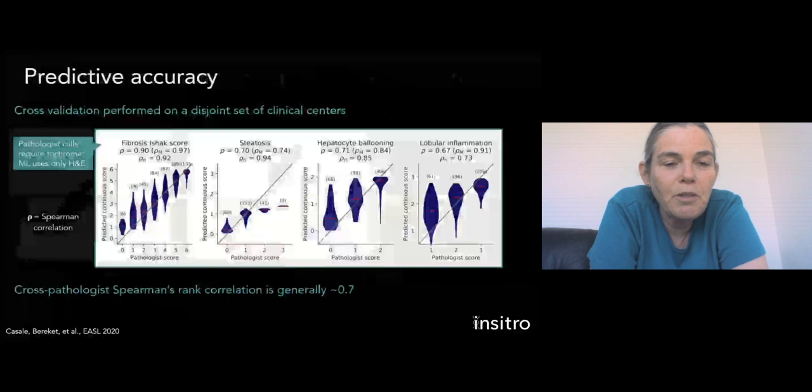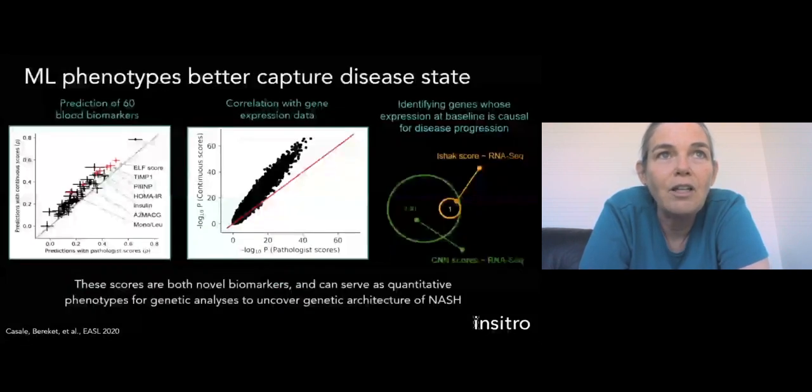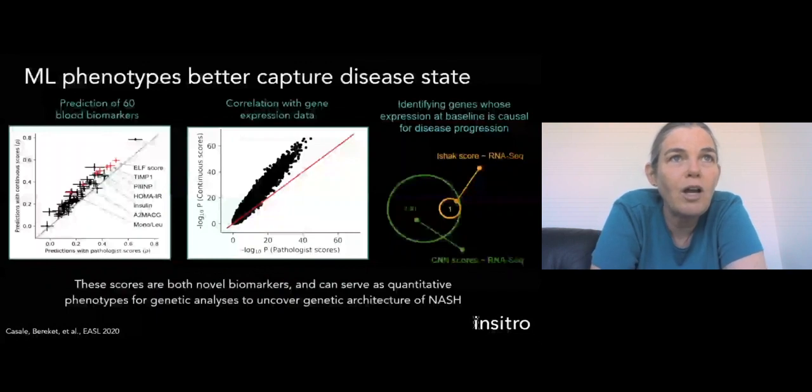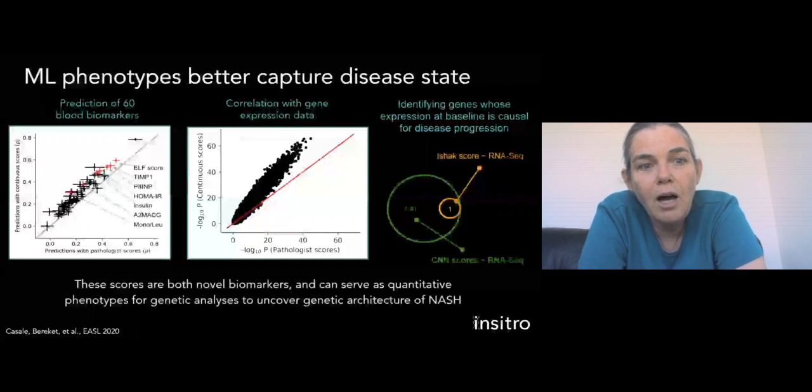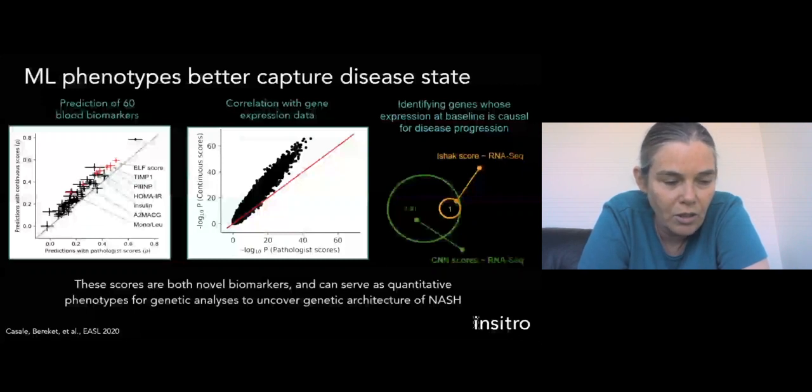Now, for us, the purpose of doing this, as I said, was really to uncover biology that allows us to really dig into the causal mechanisms of disease and identify critical factors that are disease drivers that might serve as the beginning for new drug targets. So what we see here is the correlation between these new phenotypes, these quantitative phenotypes that the machine learning has uncovered, and other things that we know are relevant to the disease state. On the left is 60 blood biomarkers that we know are relevant to NASH pathophysiology.